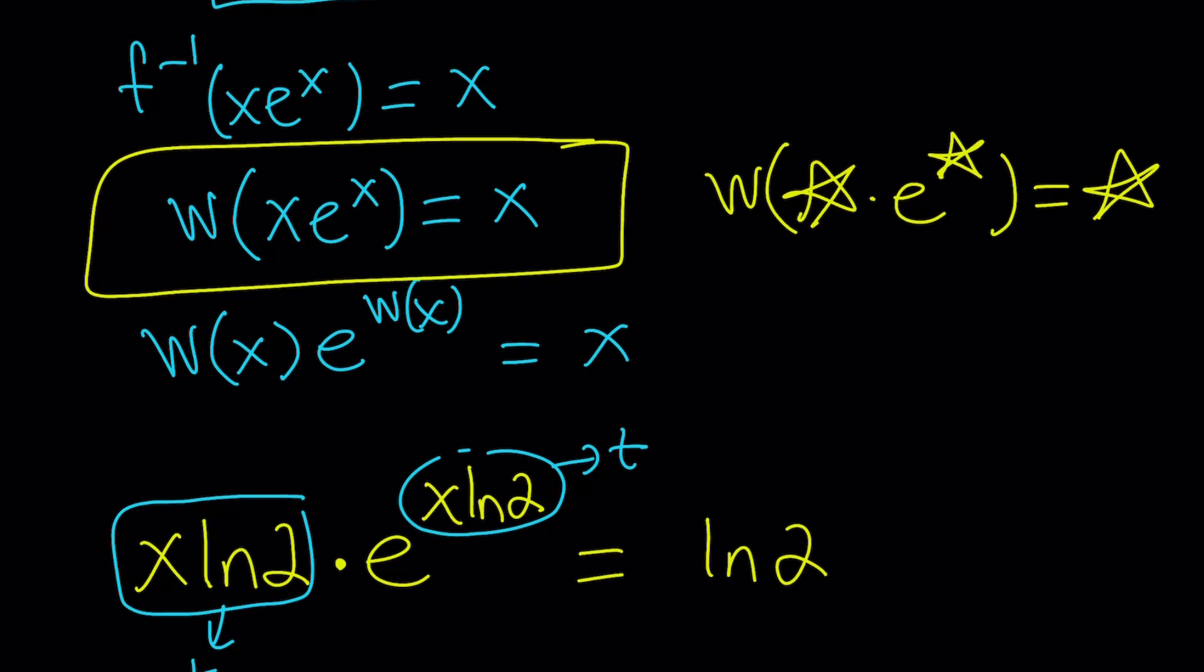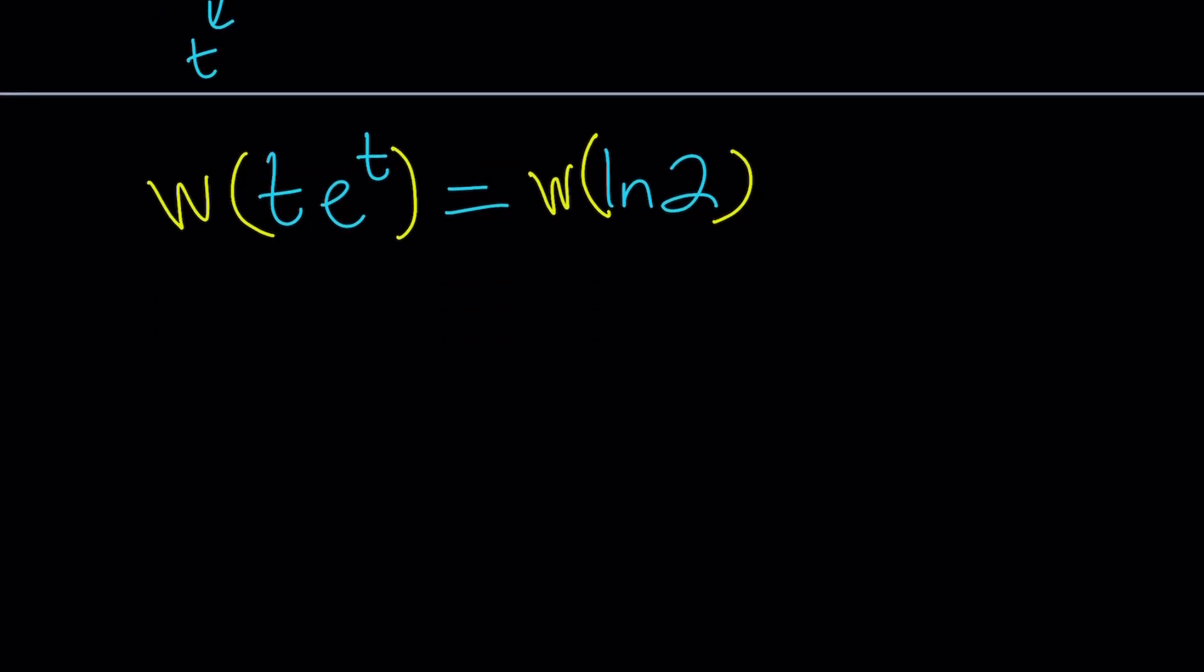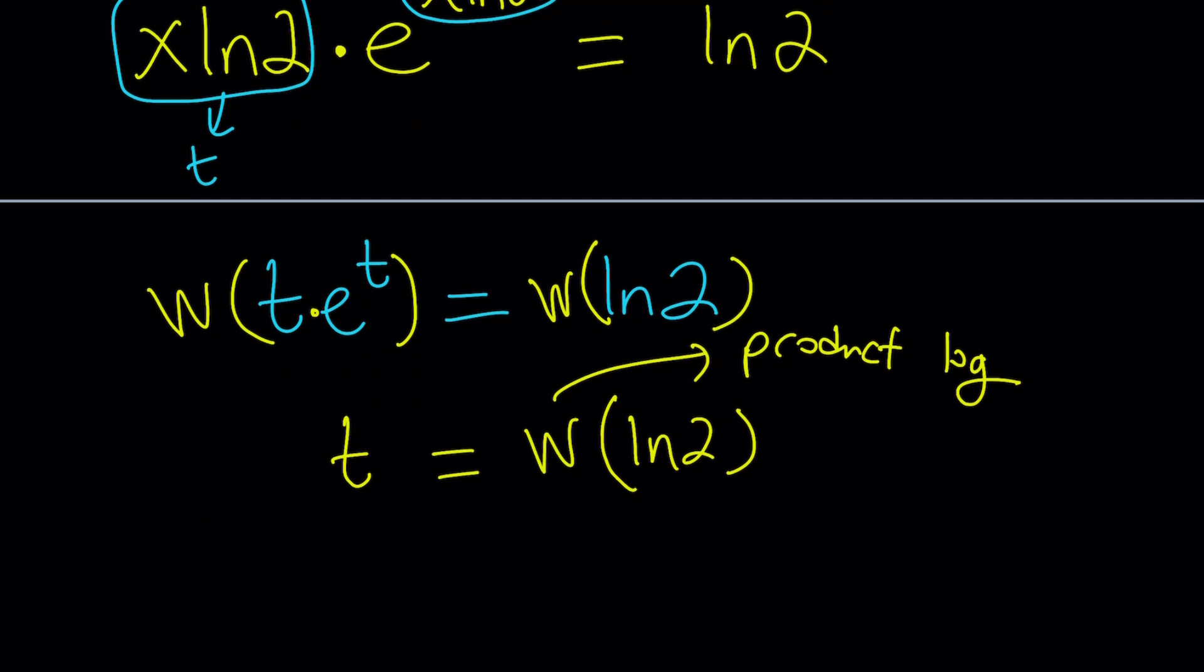That's the whole idea. Let's W both sides. Now we can apply the W on both sides, and that's basically going to do the trick. Now when you apply W to a product like T e to the T, you get T from here. So T is equal to W of ln 2. Or you could also call this product log. That's how Wolfram Alpha actually recognizes it, because if you just say Lambert's W, it's not going to recognize it. So it's called product log. Now, T is something that we named. So T is x ln 2.